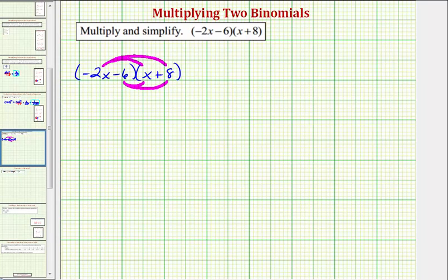So now let's go ahead and find the products, and then we'll combine the like terms. For negative two x times x, we would have negative two x squared. Notice how this is x squared because this is really x to the first, and this is also x to the first, so when multiplying, we add the exponents.